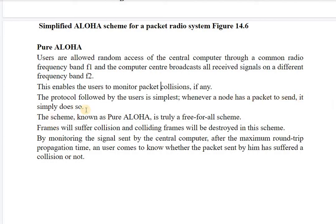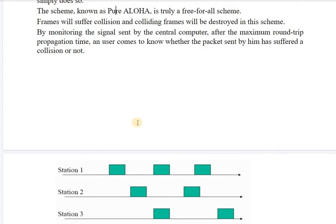In pure Aloha, users are allowed to send data randomly with random access to the central computer through common radio frequency F1. The computer center broadcasts all received signals on frequency F2, enabling users to monitor packet collisions. The protocol is simple: whenever a node has a packet to send, it does so immediately. This is a truly free-for-all scheme. Frames will suffer collisions and colliding frames are destroyed — there is no provision to recover, so stations wait a random amount of time and retransmit.